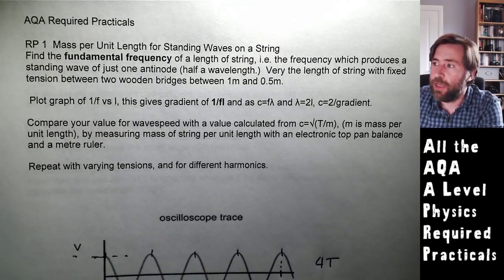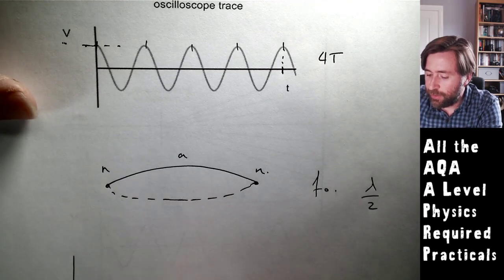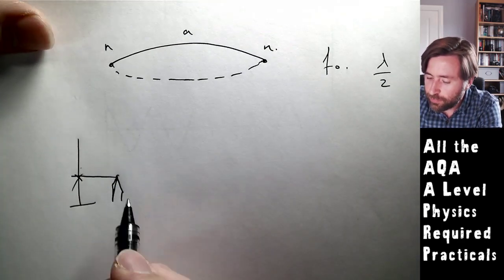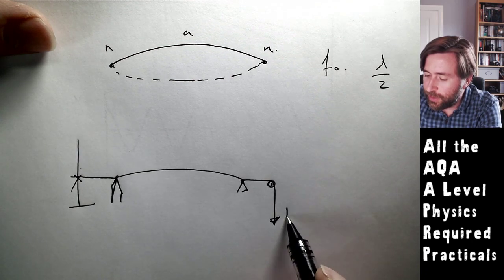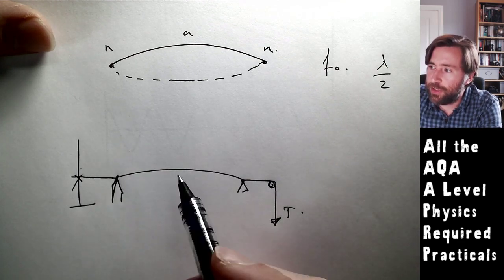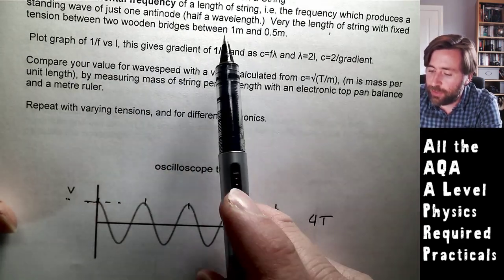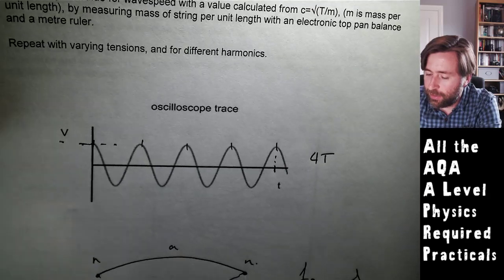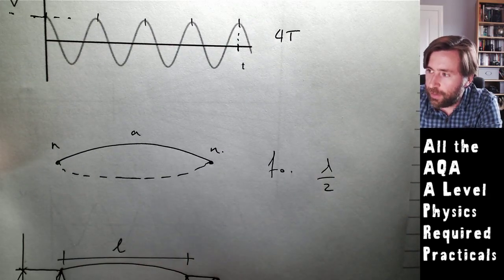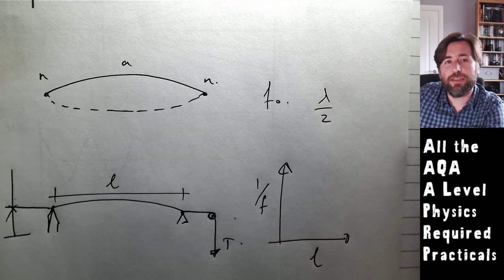You vary the length of the string by having two fixed wooden blocks. In the AQA practical, you clamp the string to one end, have a wooden block as a bridge for the string, then the wave goes between another wooden block and a pulley with a tension weight hanging down. You vary this length between one and half a metre, looking for different harmonics. Then you plot one over f against length.